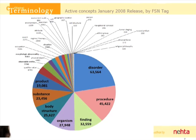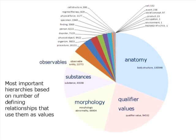If we look at what you might think of as the values — in other words, the targets of defining relationships in SNOMED — we end up with a slightly different picture. Looking at the number of defining relationships that use these hierarchies as values, there are 130,000 defining relationships that use anatomy as the target. The qualifier value hierarchy is really a hierarchy that collects disparate...